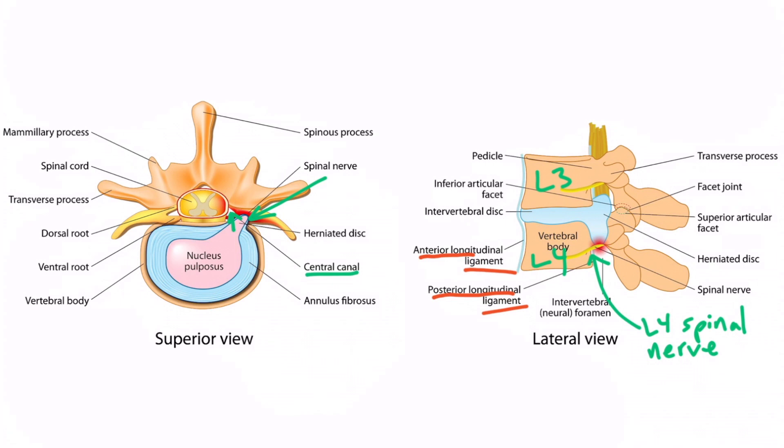Remember, all of the nerves below C7 exit below their corresponding vertebrae. So if this were the L4 vertebra, then the nerve indicated with the green arrow would be the L4 spinal nerve. Now that we've covered herniated discs, let's discuss spinal stenosis.